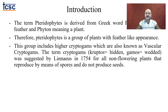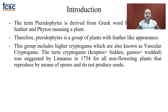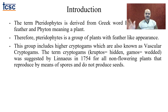This group includes higher cryptogames, also known as vascular cryptogames. The term cryptogames is composed of two Latin words — cryptos meaning hidden and gamos meaning wedded — suggested by Carolus Linnaeus in 1754 for all non-flowering plants that reproduce by means of spores and do not produce seeds. These are vascular cryptogames because they are not producing seeds but they have vasculature — the presence of xylem and phloem for conduction of water and food material.